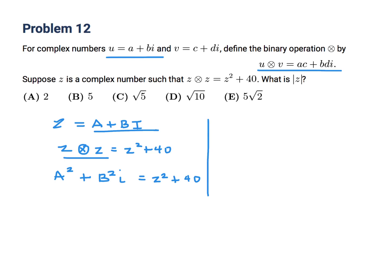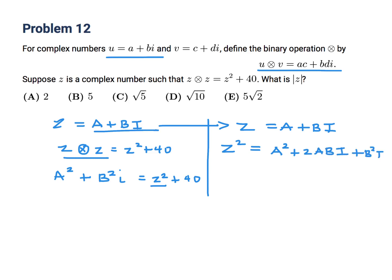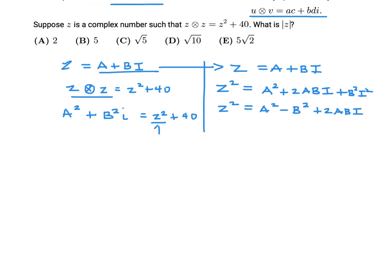Let's compute z² directly. z² = A² + 2ABi + B²i² = A² − B² + 2ABi. Plugging that back into the equation, z ⊕ z = A² + B²i = (A² − B²) + 2ABi + 40.